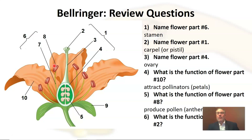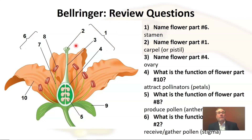Finally, what is the function of flower part number two? This is part of the female reproductive parts, up at the top — this is called the stigma. It receives or gathers pollen. When pollen moves from the anther to the stigma, we say that pollination has occurred.